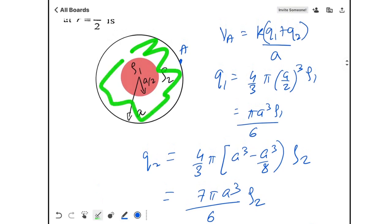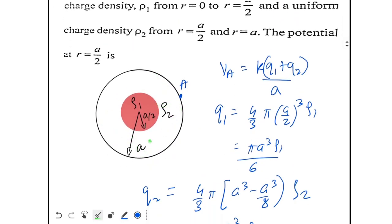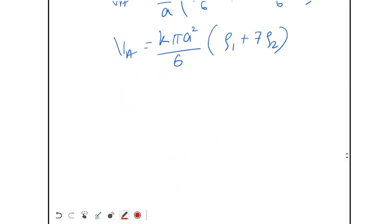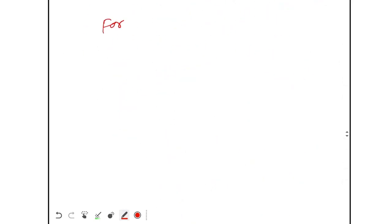Now I have to find the electric field in the shell region to get the potential at any inner point. We need the potential at r = a/2, so we need the electric field for a/2 ≤ r ≤ a.